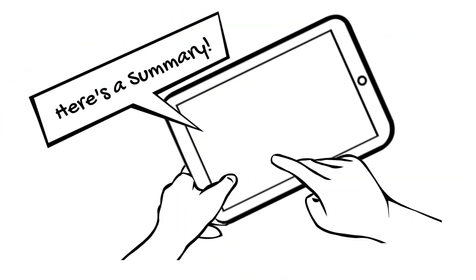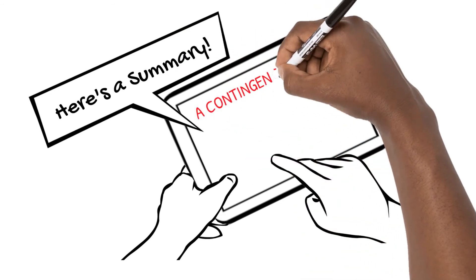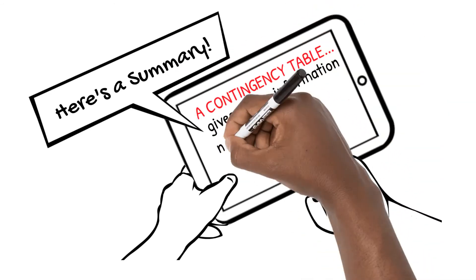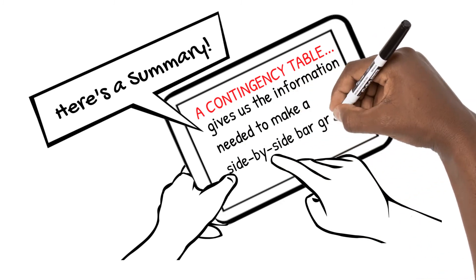Here's what we've learned in this video. A contingency table gives us the information needed to make a side-by-side bar graph.